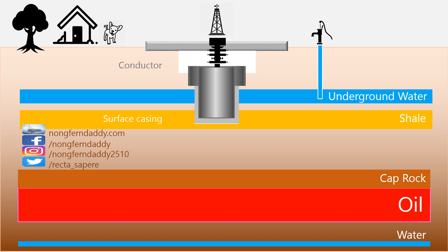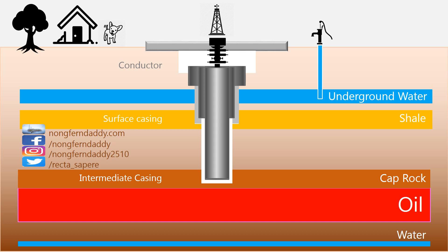Now we have surface casing cemented firmly with the formation, so we can mount BOP on it. With BOP in place, we can drill further. We call this the intermediate section. For the same reason, we end the section in the last shale before entering the reservoir. This shale is usually served as a cap rock. As the name implies, it provides a seal on top of the reservoir so that the petroleum doesn't migrate up to surface. Then we put the second casing in the hole and cement it. We call it intermediate casing.